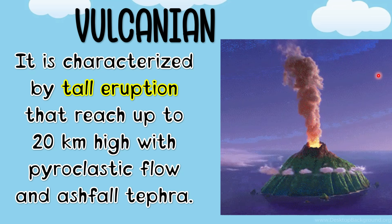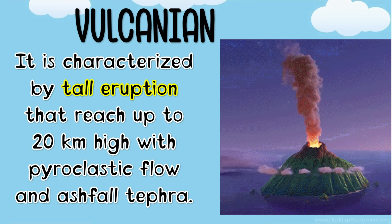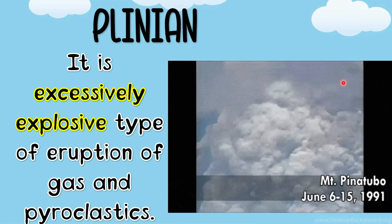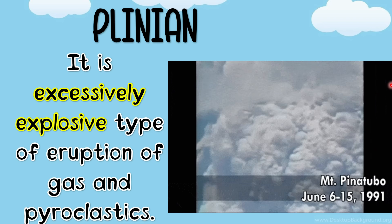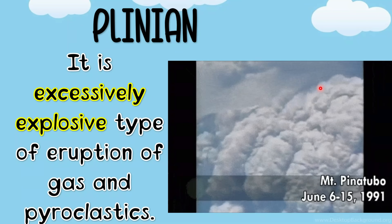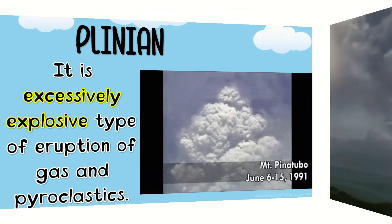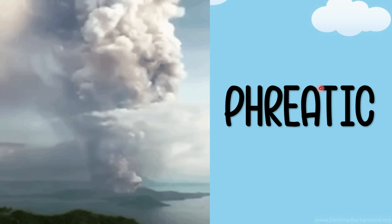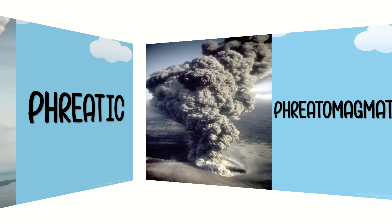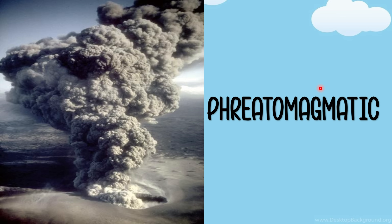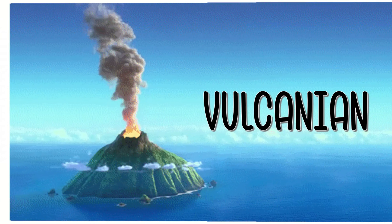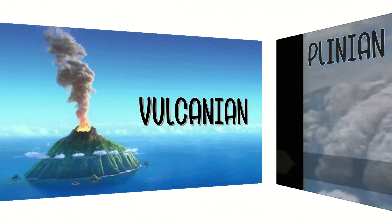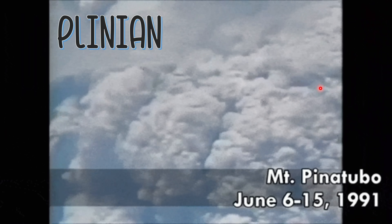The fourth type is vulcanian, characterized by tall eruptions that reach up to 20 km high, with pyroclastic flow and ashfall tephra. Lastly, we have plinian — an excessively explosive type of eruption of gas and pyroclastics. It is the most intensely violent kind of eruption, which happened to Mount Pinatubo in 1991. In summary, the five types are: phreatic, phreatomagmatic, strombolian, vulcanian, and plinian as the most excessively explosive eruption.